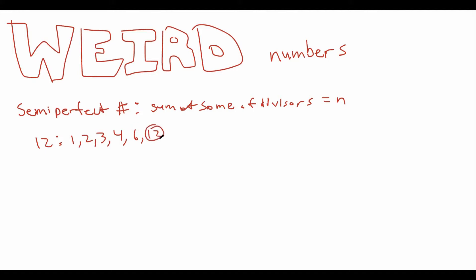Of course, you can't just choose 12 itself, that's cheating. So, if you choose 2, 4, and 6, we can see that these indeed sum to 12. So 12 is a semi-perfect number.